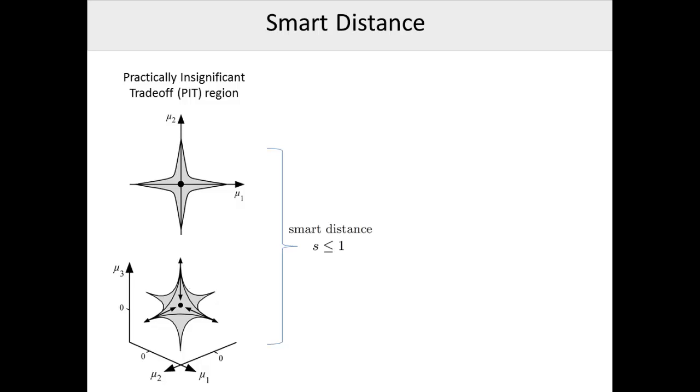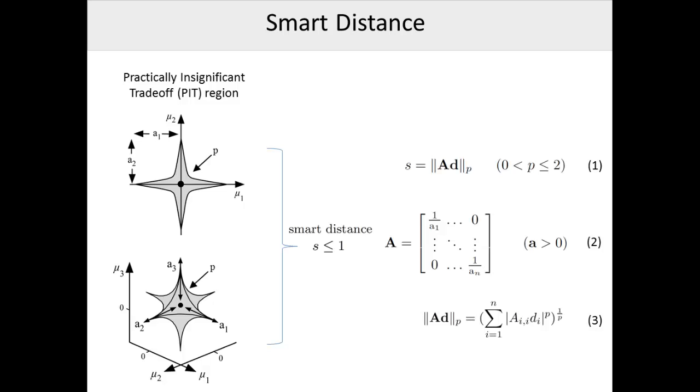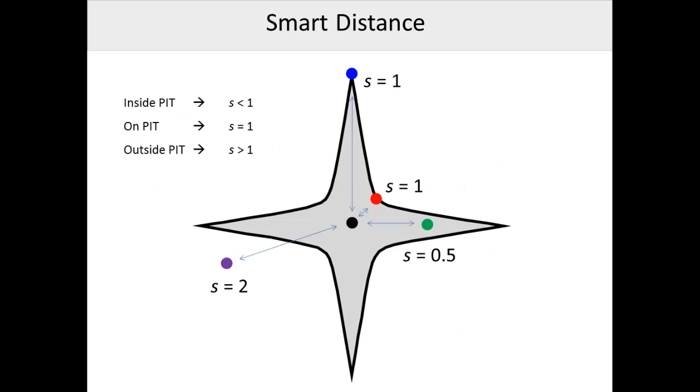This makes a shape called a LeMay curve in 2D, or a Hyper-LeMay curve in ND. The Smart Distance is calculated using user-provided values for a sub i, which represent the length of the arms of the LeMay curve for each objective direction, and p, which corresponds to the tightness of the curve. Smart Distance, s, is simply equal to the p-norm of the diagonal matrix A in the Euclidean distance between points, d, where A takes as input the user-provided values of lowercase a for each objective. The equation for calculating a p-norm is given here as equation 3 for reference. Here are four example points and their respective smart distances to the center point. Defining the PIT region in this way, with a scalar value rather than a bounded region, allows an algorithm to identify not just whether or not a new point is smart, but also to what extent it is or isn't smart.